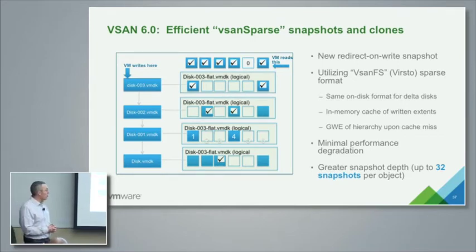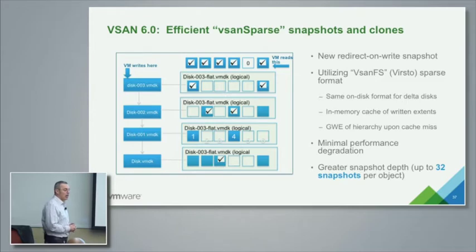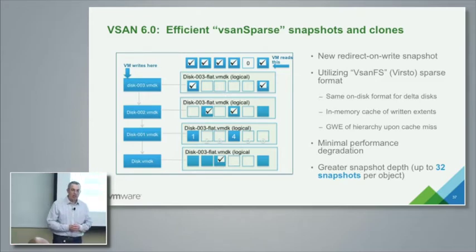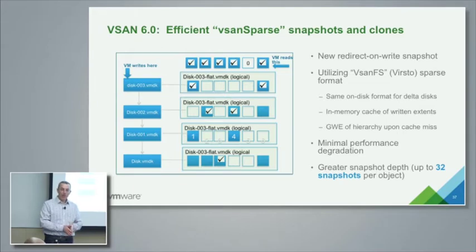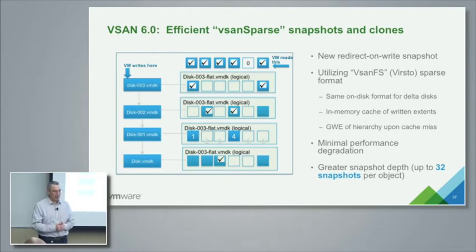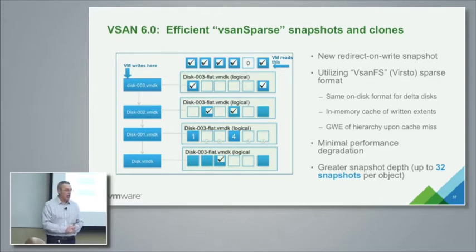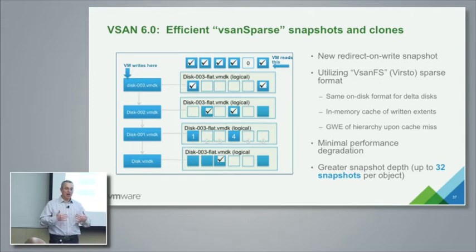The efficient vSAN sparse new format is a feature developed for 6.0, which takes advantage of VIRSTO — the technology acquired with the VIRSTO acquisition. VIRSTO is now in 6.0 as a new on-disk format, which is why upgrading from 5.5 to 6.0 involves a rolling upgrade that also migrates data. The entire data in your cluster will be rewritten in the background gradually as rolling upgrades happen.